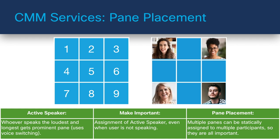Now let's talk about pane placement. We have active speakers — whoever's talking the loudest or the longest gets prominence. There's also 'make important,' which means a participant who's always going to be seen even if they're not speaking, like a CEO. With CMS and CMM version 2.7 or greater, in an active meeting an administrator can place SIP-connected participants in specific panes so that they're always seen in that specific location on the screen, even if they're not speaking.